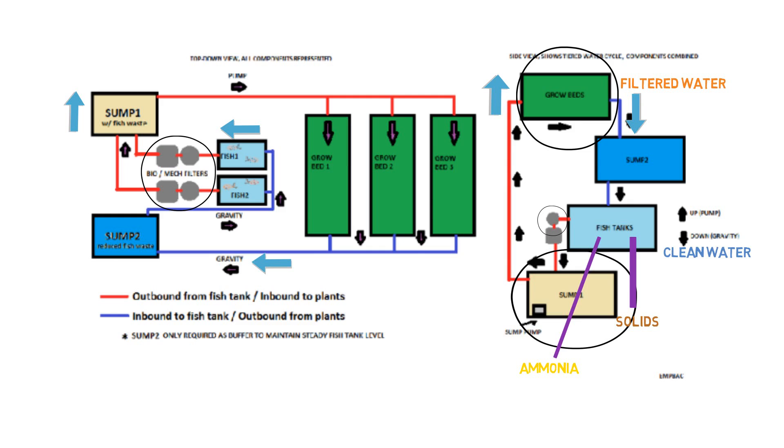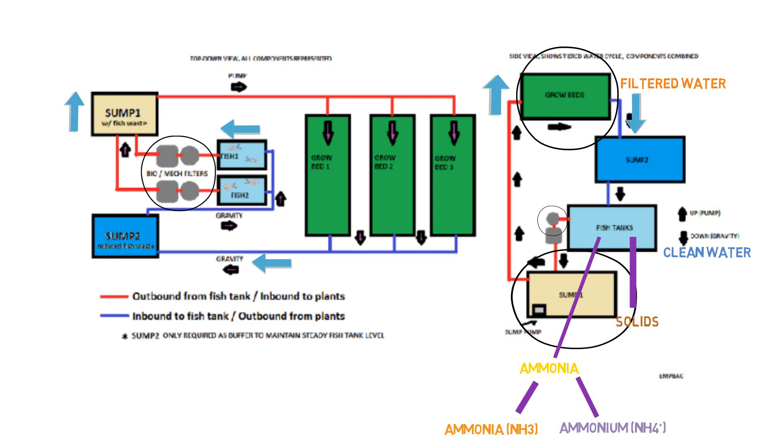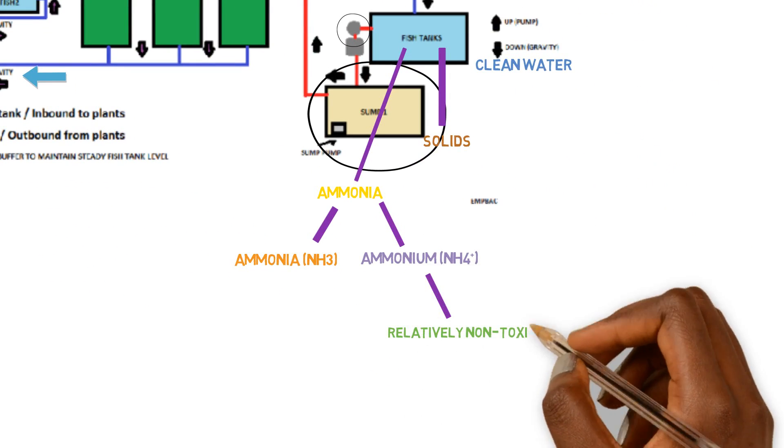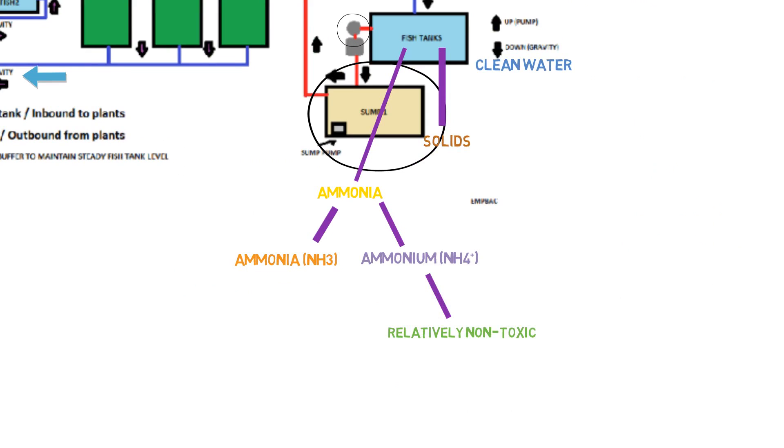So as far as ammonia, we can get a quick understanding on how ammonia works in an aquaponic system. So we have two types of ammonia that's present in the system. We have ammonia as NH3 and we have ammonium as NH4+. Ammonium in NH4+, is relatively non-toxic to the fish. So we can have high concentrations of ammonium inside of the system and no impact would happen on the fish. Now ammonia is a different story. This is unionized ammonia. This is free ammonia, gaseous ammonia. This here is what is highly toxic to the fish.